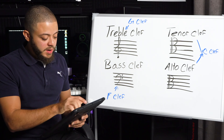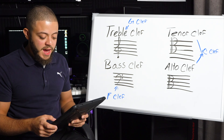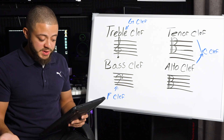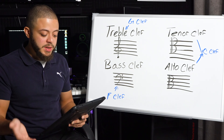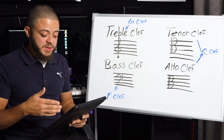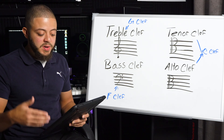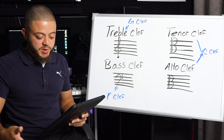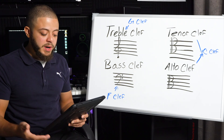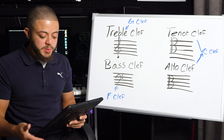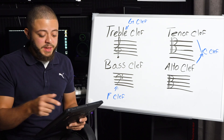Moving on to the bass clef, we have the bass, of course, cello, euphonium, the double bass, bass guitar, bassoon, contrabassoon, trombone, baritone horn, tuba, and timpani.